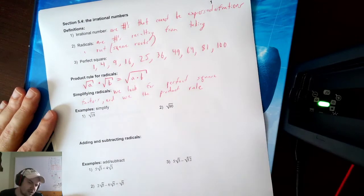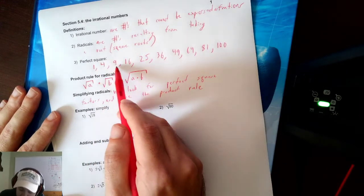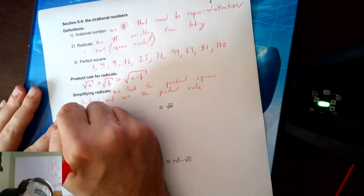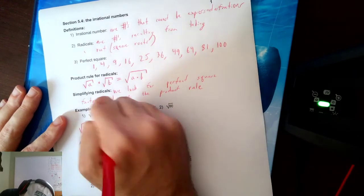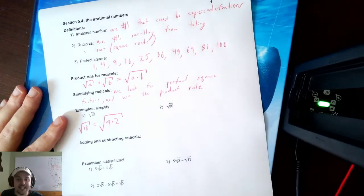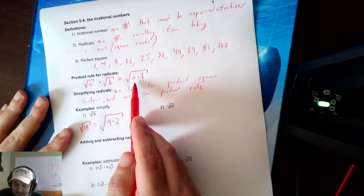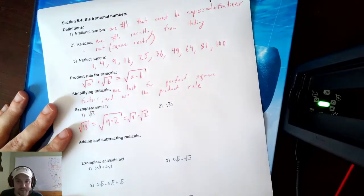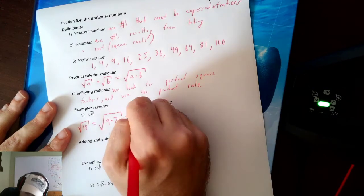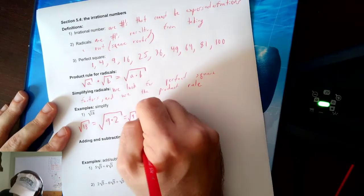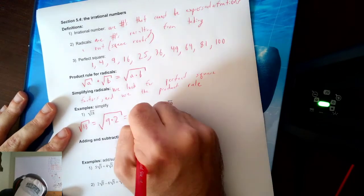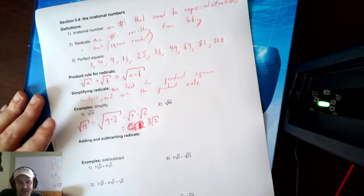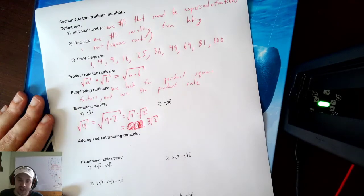1 divides 18, but that doesn't really help. 4 doesn't. 9 does — 9 divides 18. 16 doesn't, and now I'm bigger so I'll stop checking. I want to write the square root of 18. I'm going to split 18 into 9 times 2. That means this is the same as the square root of 9 times the square root of 2. I know the square root of 9 is 3, so this becomes 3 square root of 2. The multiplication is implied. So that's our first example.